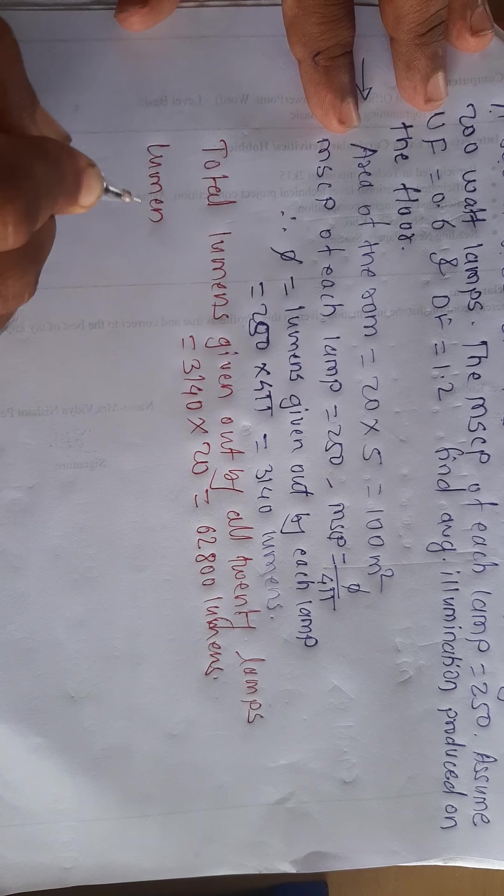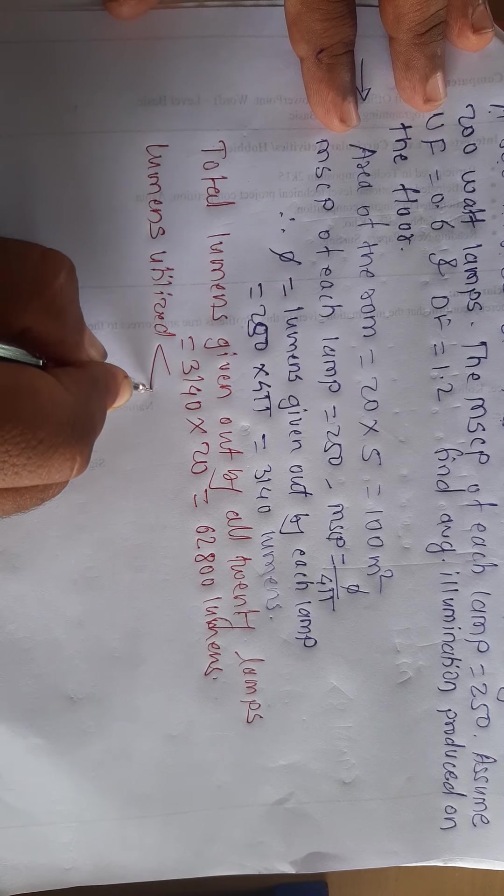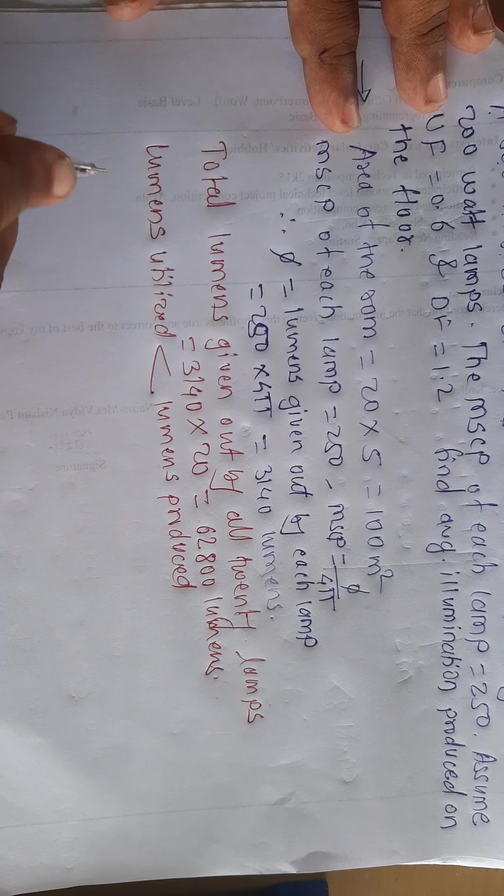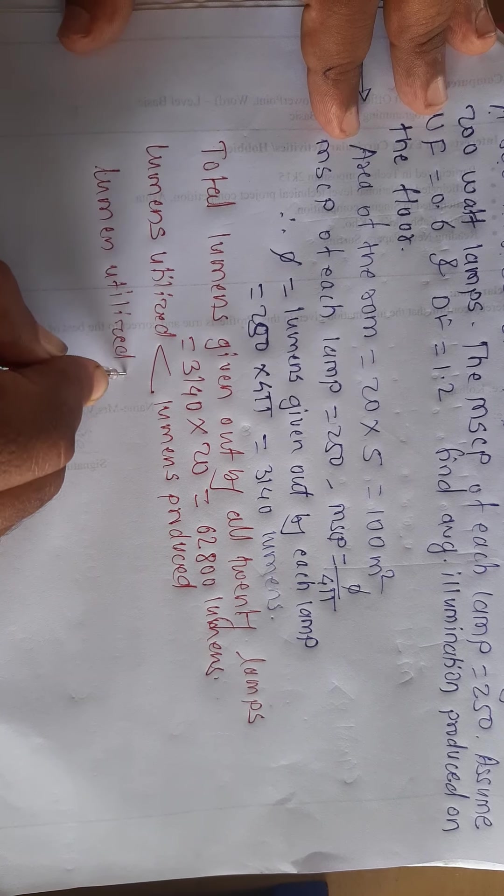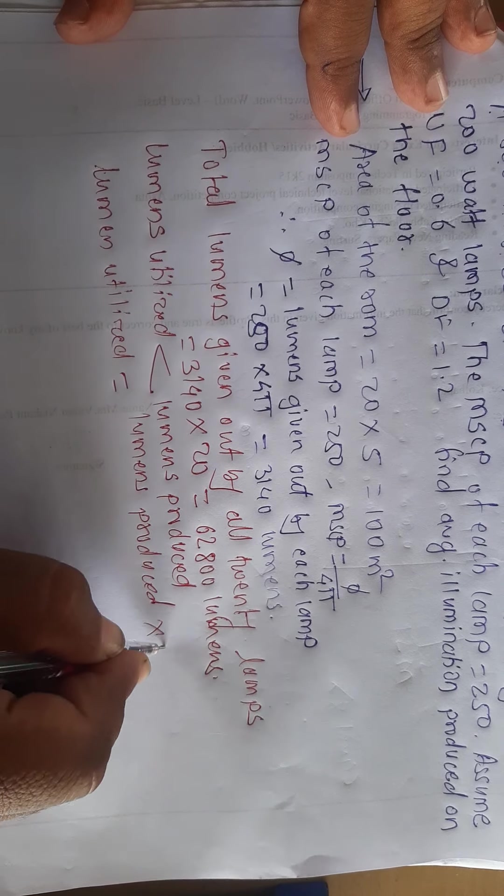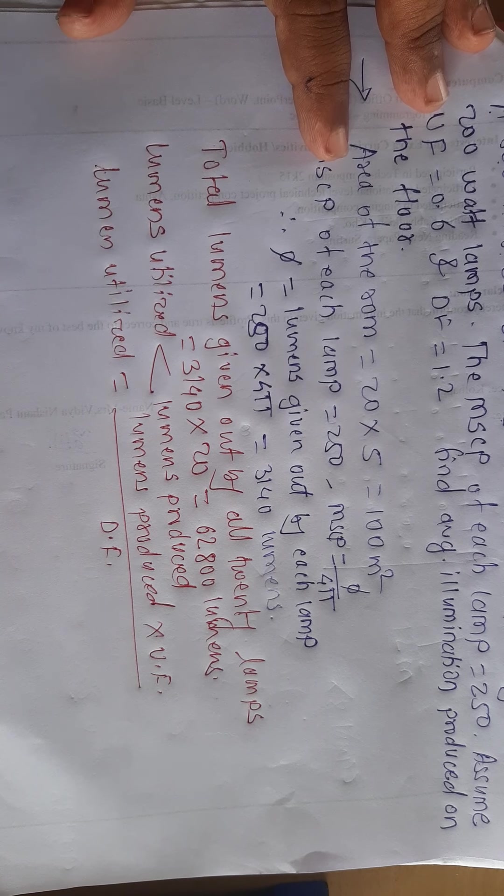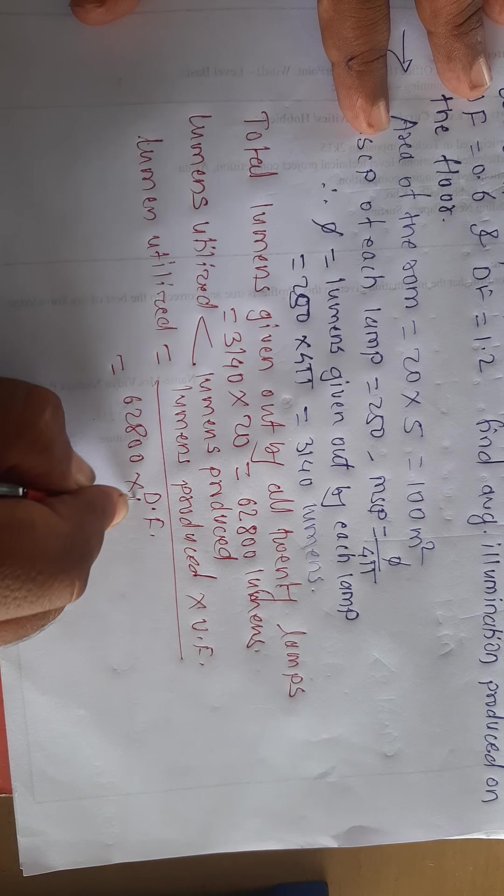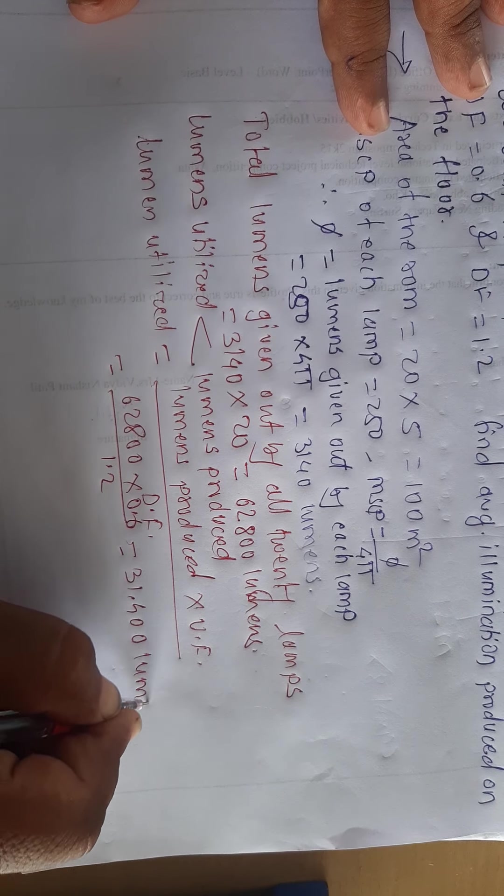The lumens used is less than lumens produced. Therefore, lumens utilized is equal to lumens produced into utilization factor divided by depreciation factor. This is 62,800 into 0.6 divided by 1.2.